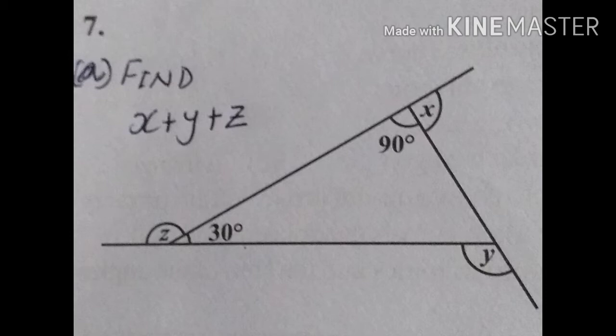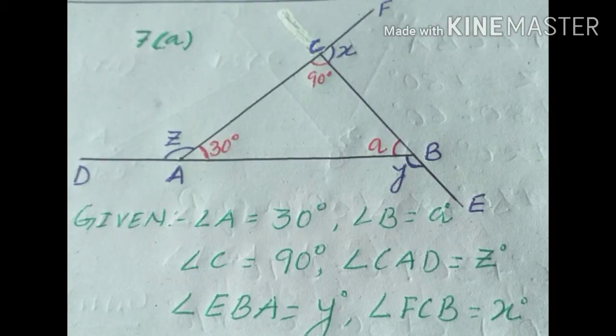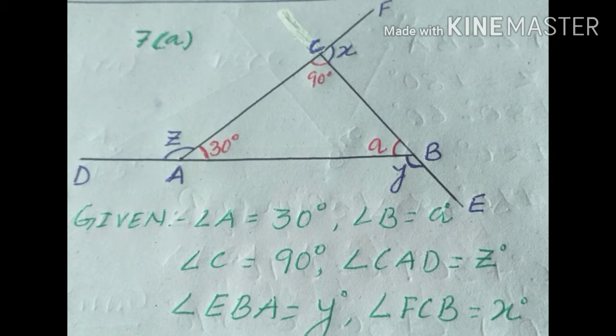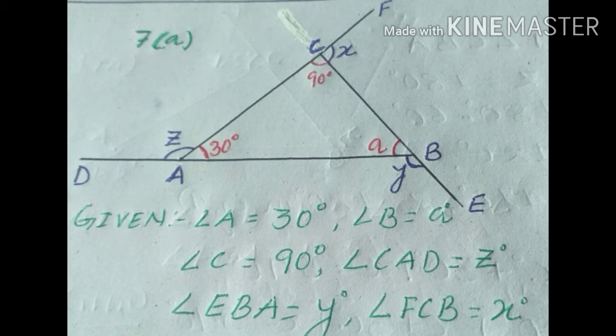For the triangle I've given the name A, B, and C, and for the extended lines I've given D, E, and F. Angle A is equal to 30 degrees — that's our interior angle. Angle B is not given so we'll use a variable. Angle C is equal to 90 degrees. Angle CAD equals z, angle EBA is our y, and angle FCB equals x degrees.